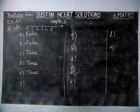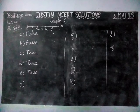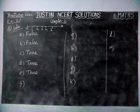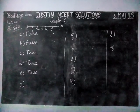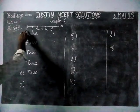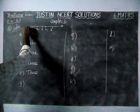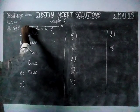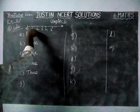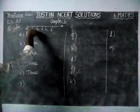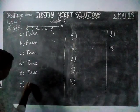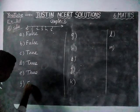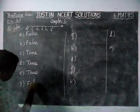Next, option F: 'All whole numbers are natural numbers.' This is false, because 0 is a whole number but 0 is not a natural number. Therefore, this statement is false.